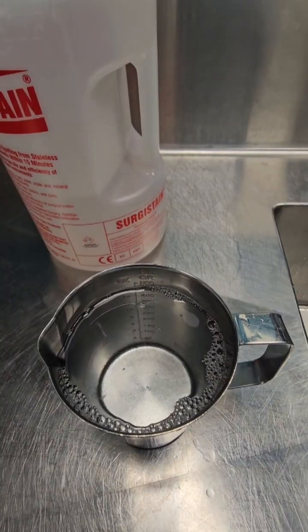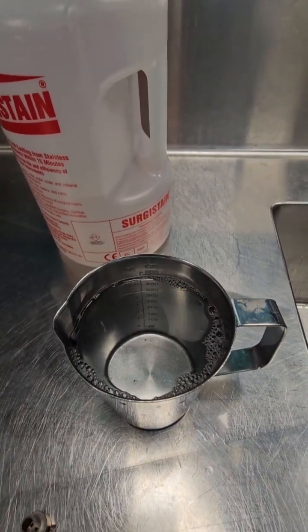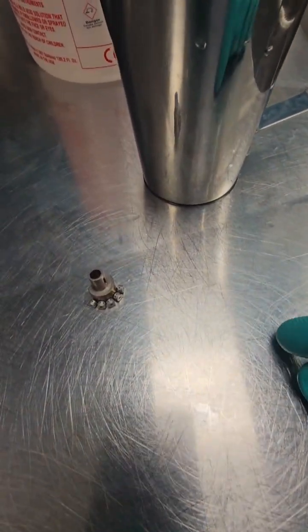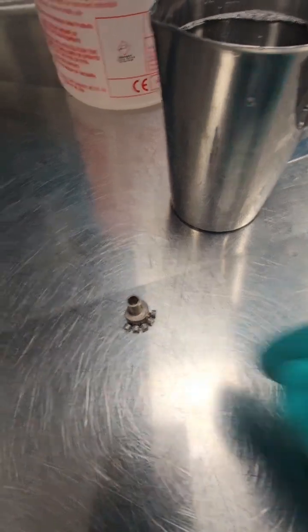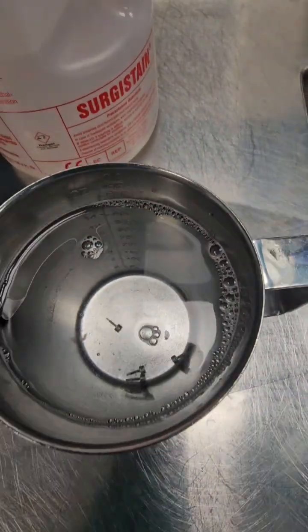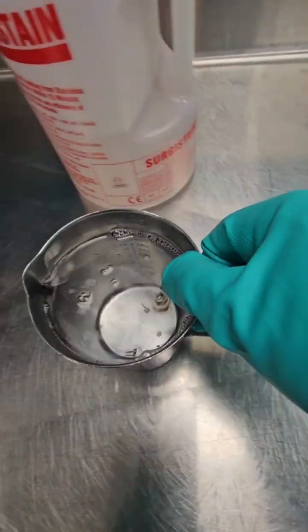You can see it actually mixes pretty good there. You might want to give it a little stir to distribute the chemistry a little bit better. But what the instructions state is that we're going to soak our device in it for 15 to 30 minutes, depending on how heavily stained it is. This one was pretty stained up. I'm going to go like in the mid mark. I'm going to go about 20 to 25 minutes.